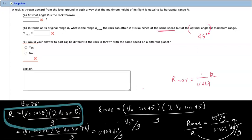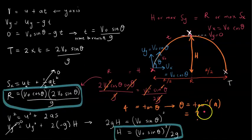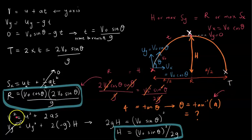For part C: would the answer to part A be different if the rock is thrown at the same speed on a different planet? Our result for theta was tan θ = 4, which does not contain G. So the answer to part A would be the same on a different planet.